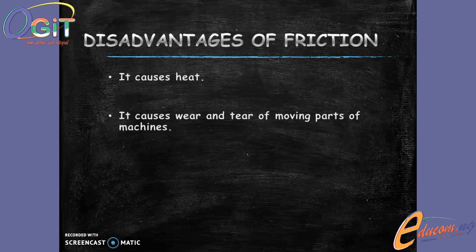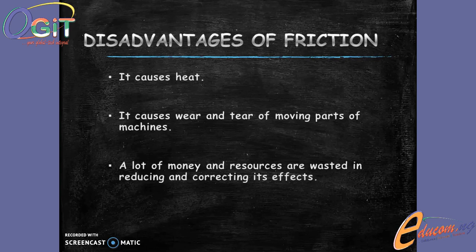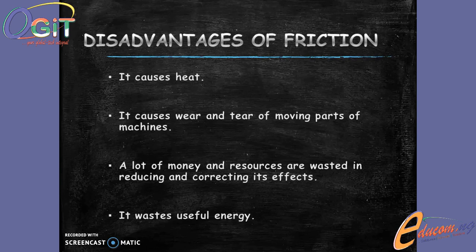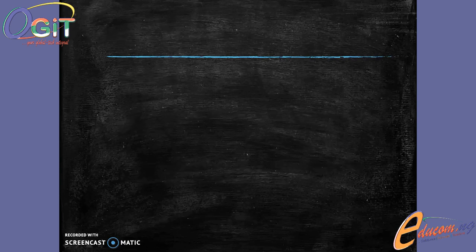Next, friction causes wear and tear of moving parts of machines. An example is your car tire — as time goes by it wears off and gets damaged, also in terms of the belt of our machines. Another disadvantage is that a lot of money and resources are wasted in reducing and correcting its effects. Lastly, it wastes useful energy — machines are supposed to run at 100% efficiency, but as a result of friction the efficiency is reduced, leading to waste of useful energy.